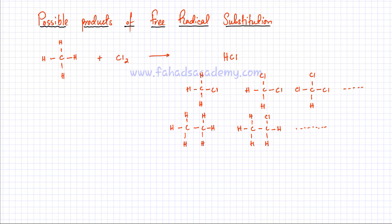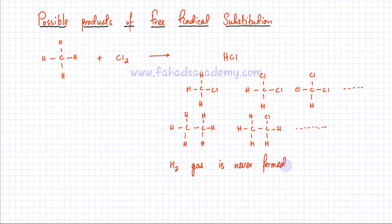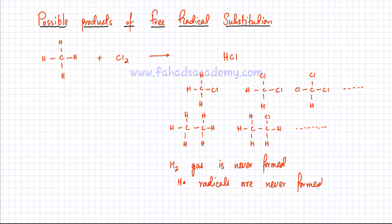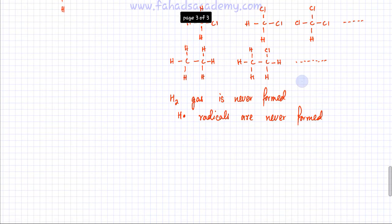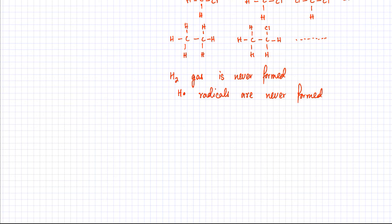What you don't get is hydrogen gas — H2 gas is never formed. And since it's never formed, that is evidence that hydrogen radicals are never formed in this particular mechanism. Because if two hydrogen radicals had formed, then in the termination step the two hydrogen radicals could join up and combine to form H2 gas. So that's one thing you must remember: hydrogen gas is never formed in the free radical substitution mechanism. You get all sorts of different products, but not hydrogen gas.